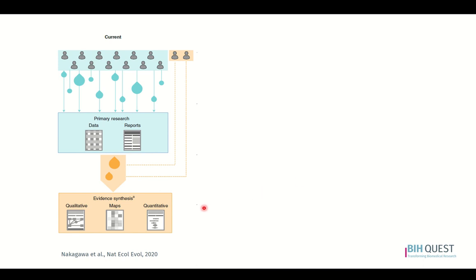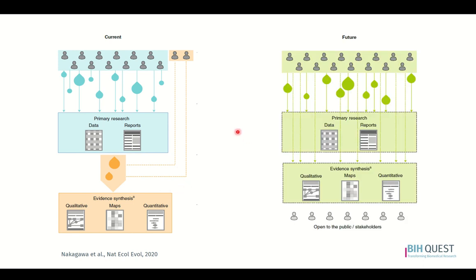On the left here we've got the current evidence synthesis system, where reviewers are separated from the research process. Data could be missing if it is not published and then does not get synthesized. Synthesis is a resource intensive task and evidence synthesis may also be delayed in relation to when new data is available. On the right we've got our future goal: systematic reviewers are embedded within the research process, supporting researchers to conduct evidence synthesis in their own domain. Data is available for synthesis and may even be directly available for synthesis, bypassing reports in the traditional published manner.